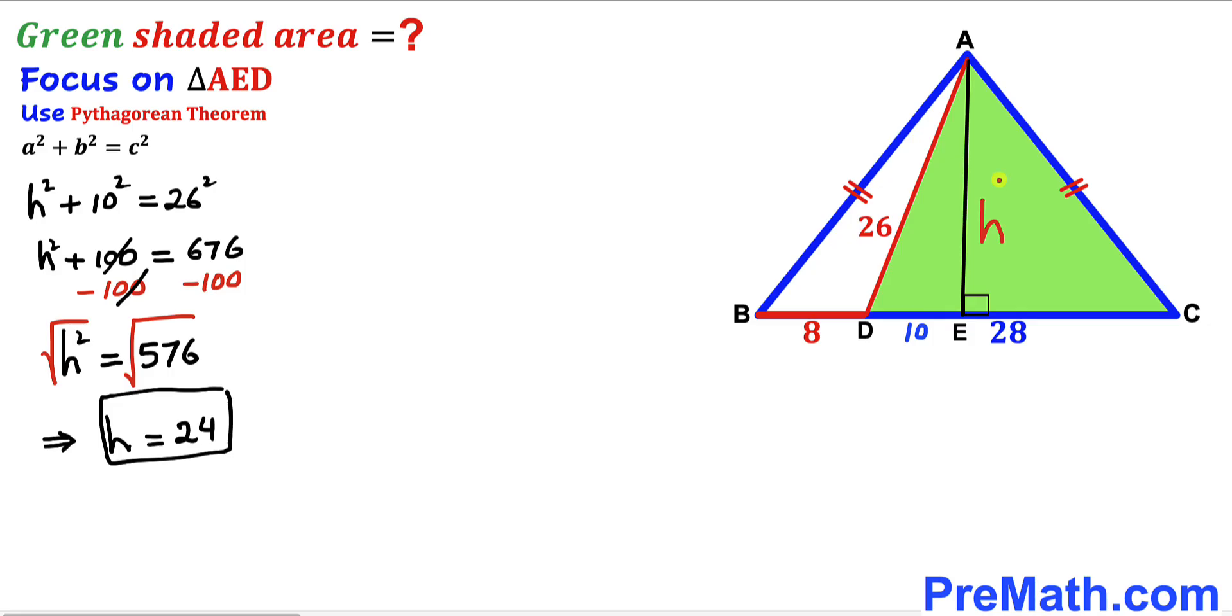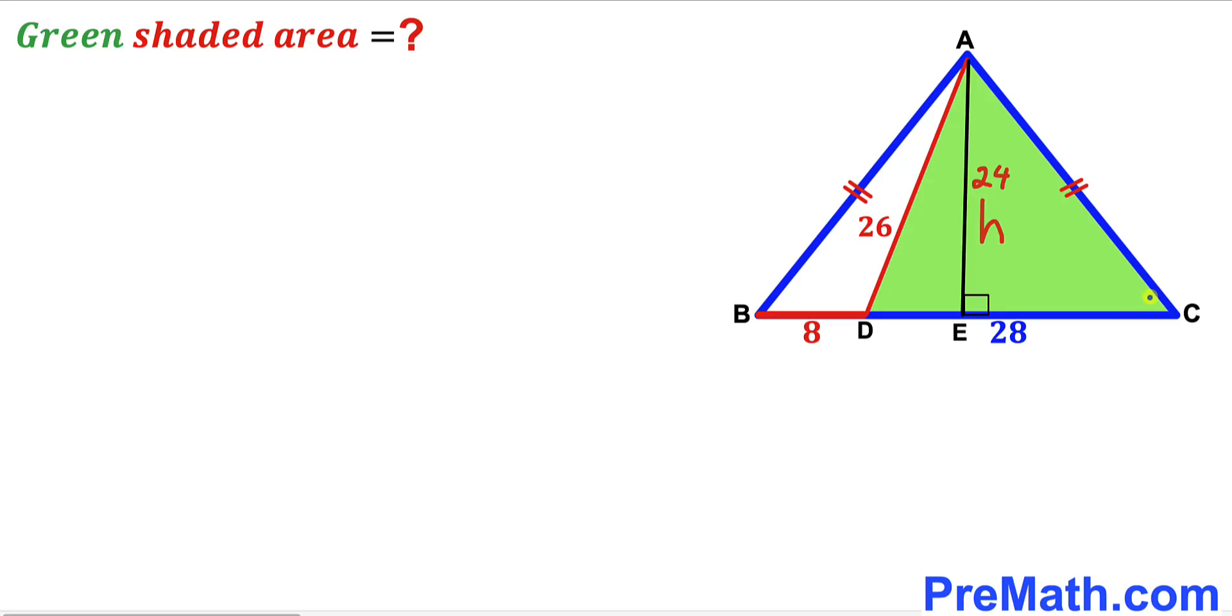Now let's focus once again on this green shaded triangle ACD. We're going to calculate its area. Let's recall the area of a triangle formula: area equals one-half times base times height. In our case, the base is 28 units and the height is 24.